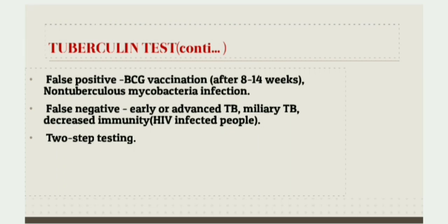In two-step testing, tuberculin reactivity slowly wanes with time in adults and may become negative after some years. In such cases, a repeat test 1 to 2 weeks after the first test exerts a booster effect and gives a strong positive reaction with induration width more than 20 mm. The tuberculin test is also known as the Mantoux test (MT), tuberculin skin test (TST), or purified protein derivative (PPD).